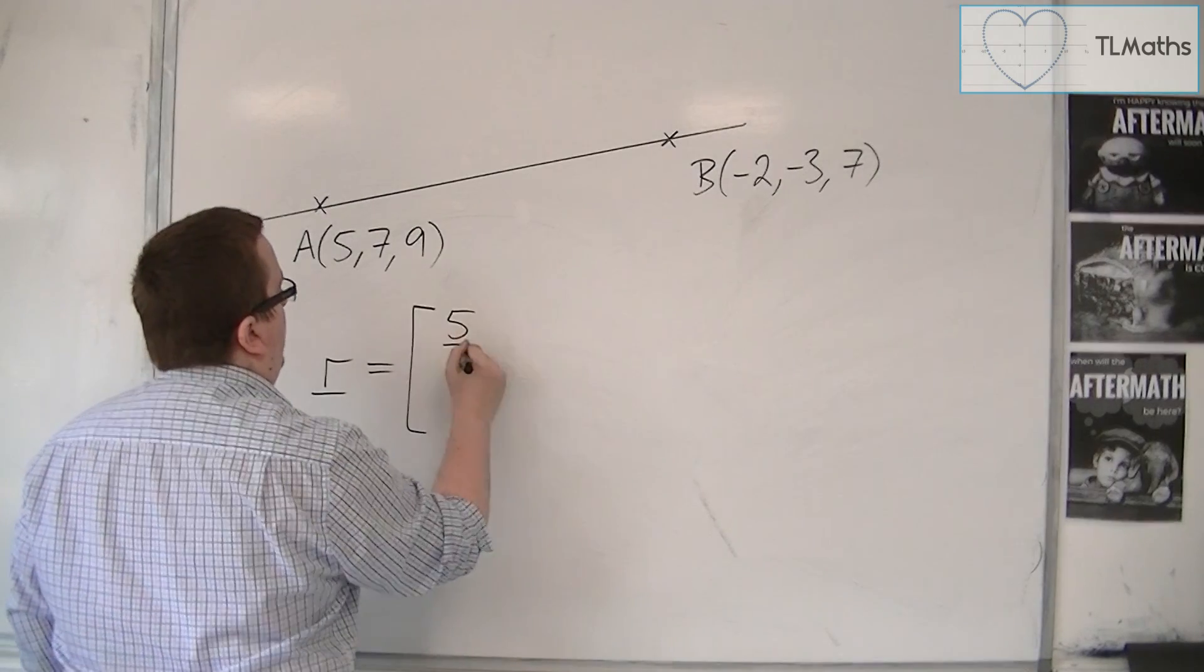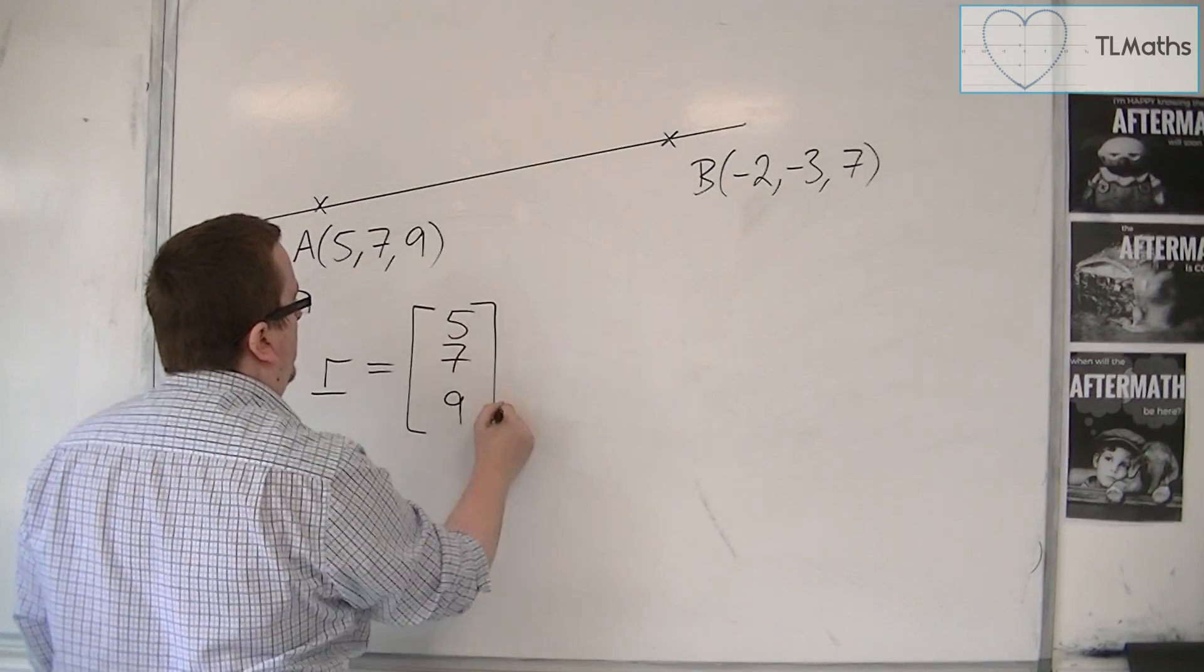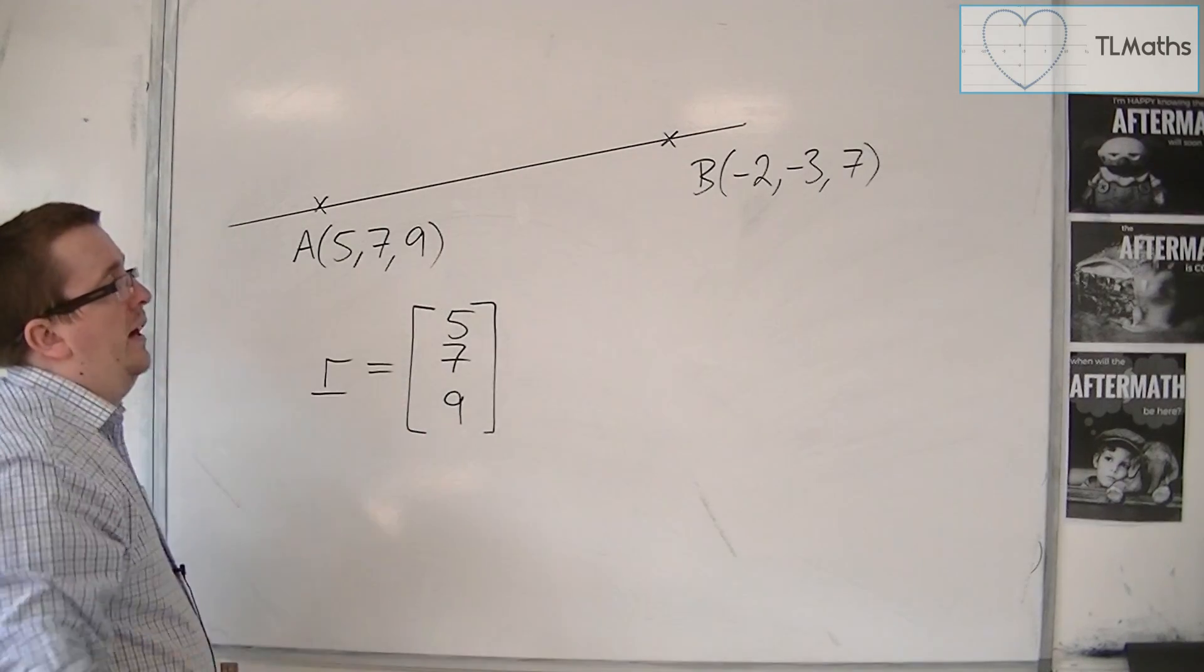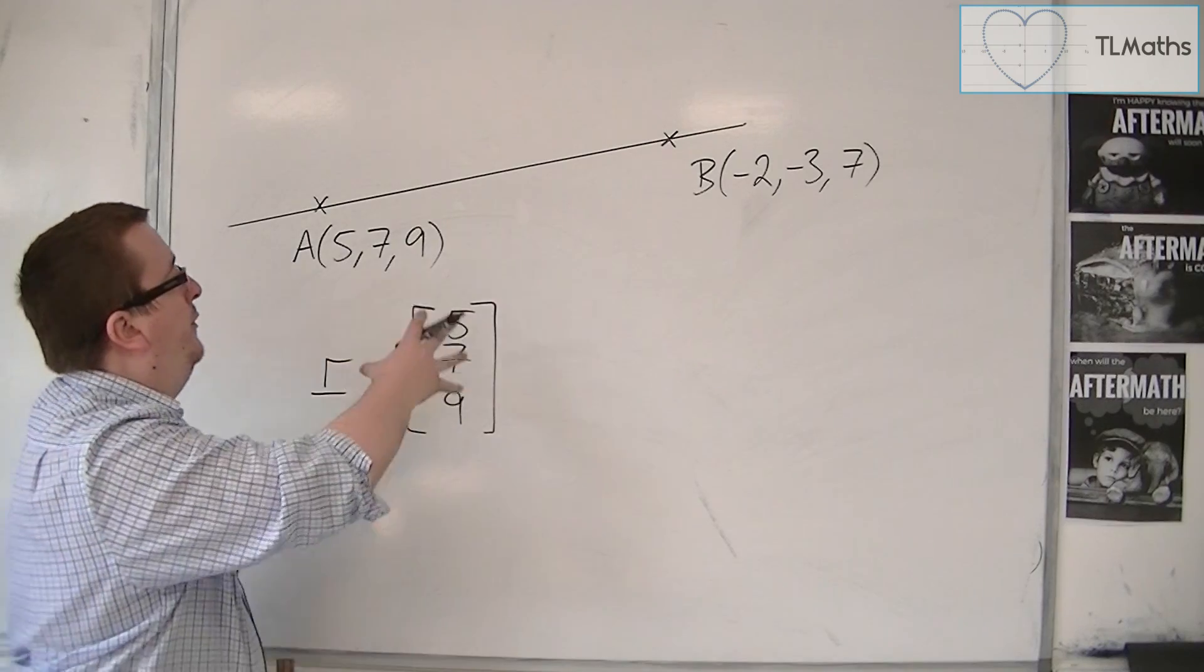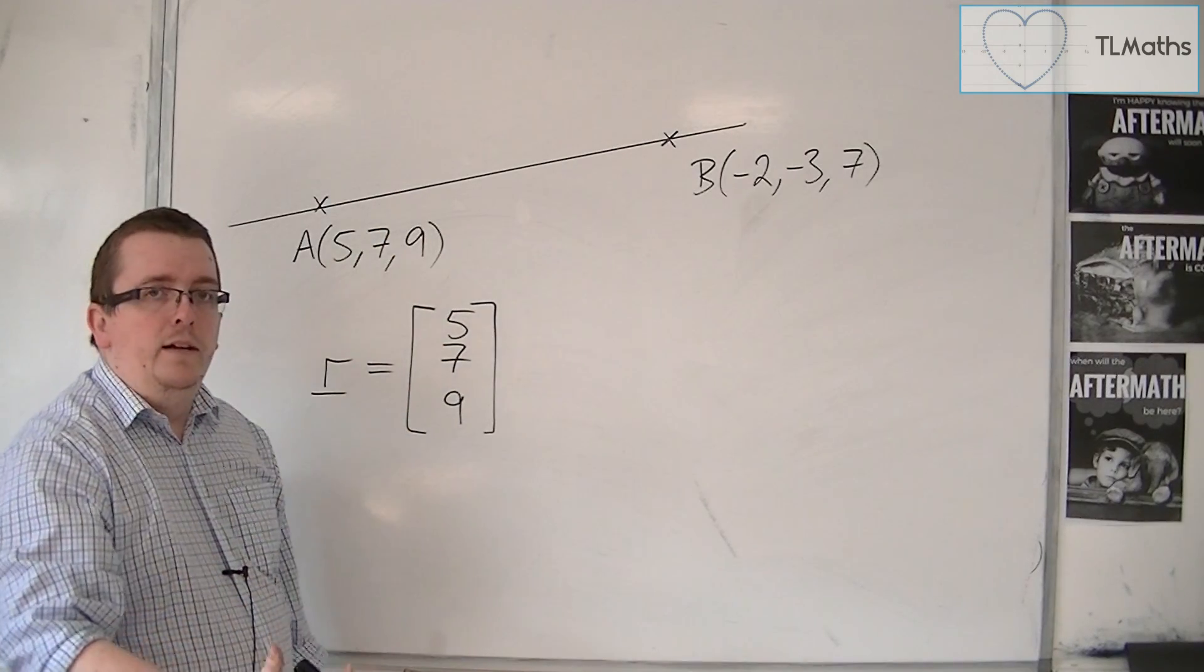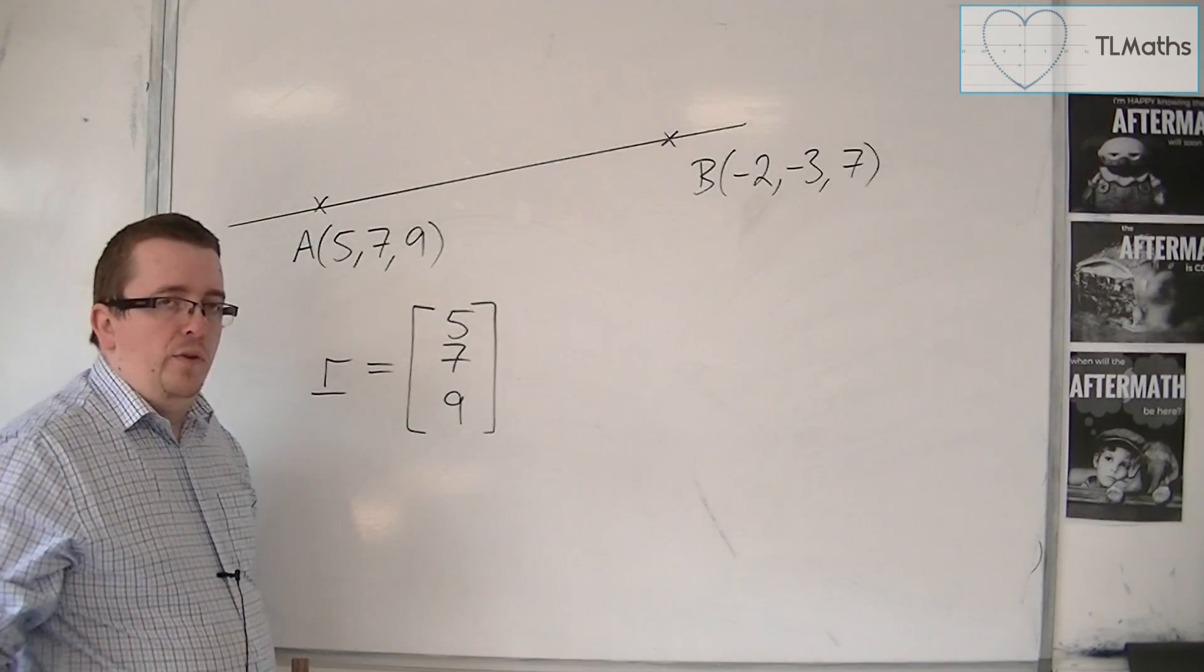So I'm going to use A: 5, 7, 9. Now you could equally use -2, -3, 7 here, but I would generally use A if there's an A in the question.